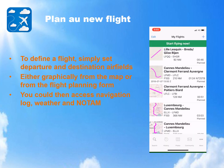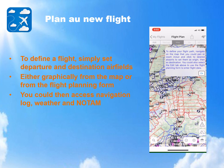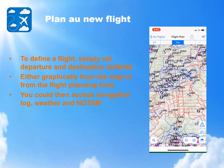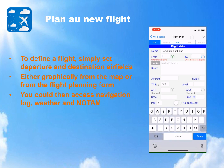Instead of using the aviation map to define a flight, you could also use the flight planning form. For example, let's plan a new flight from Friedrichshafen to Strasbourg. From the flight list, clicking on the Add button will add a new template flight to the list. Let's open this template flight — the aviation map is displayed. By clicking on the Edit tab at the top left, we will access the flight planning form. Just enter Echo Delta November Yankee in the departure field and Lima Fox Sierra Tango in the destination field.